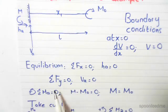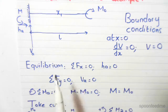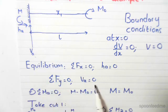Sum of Fy is equal to 0, so the sum of the vertical forces is equal to 0. VA is the only vertical force, so that equals 0.